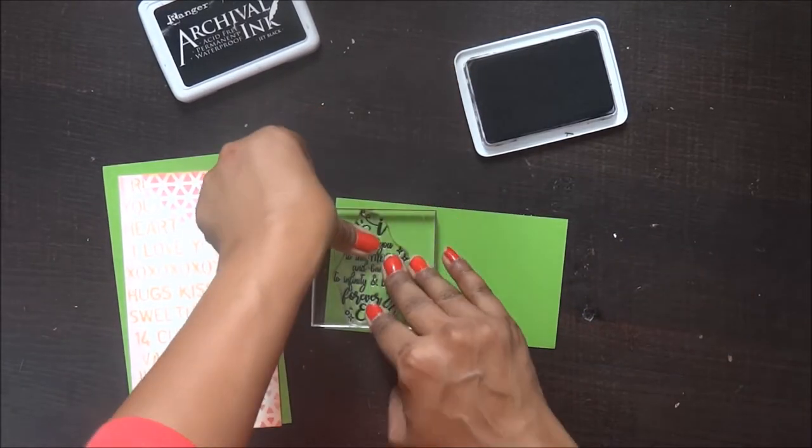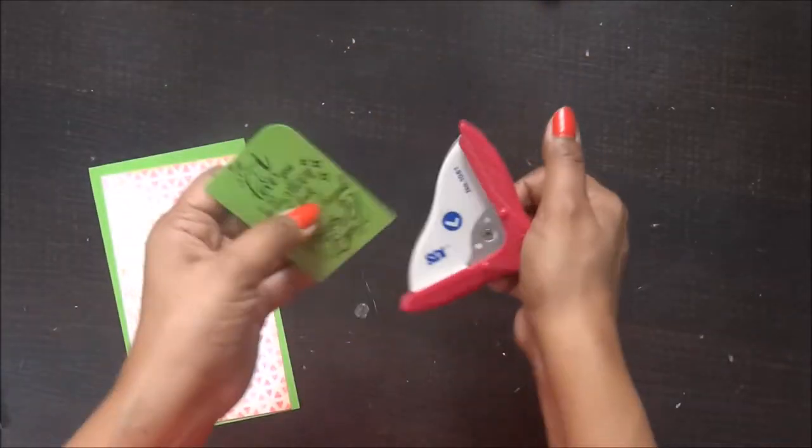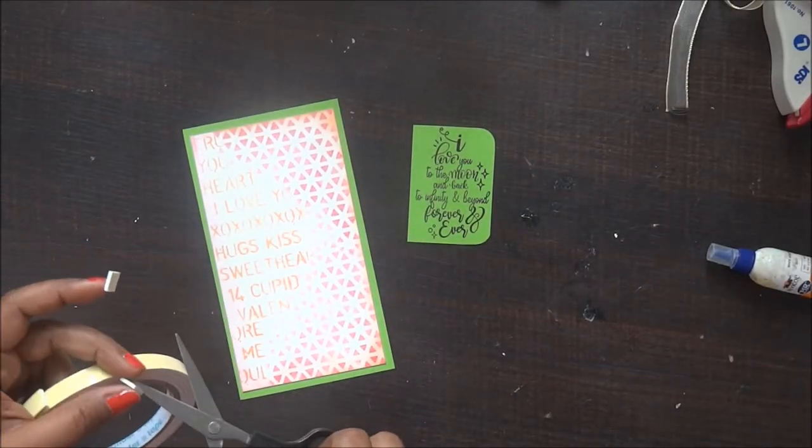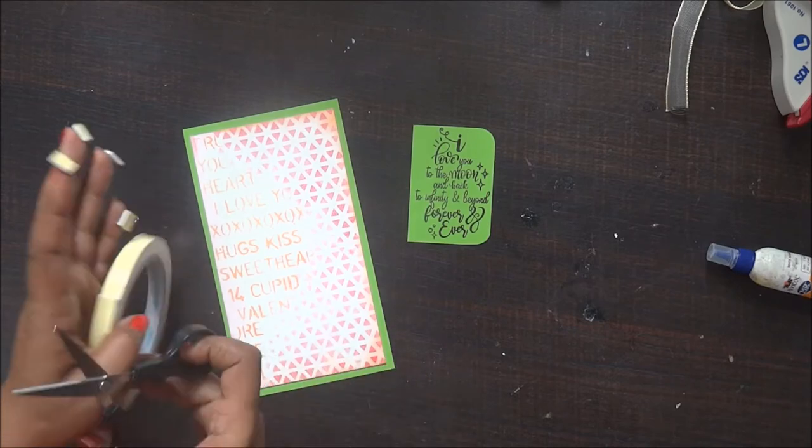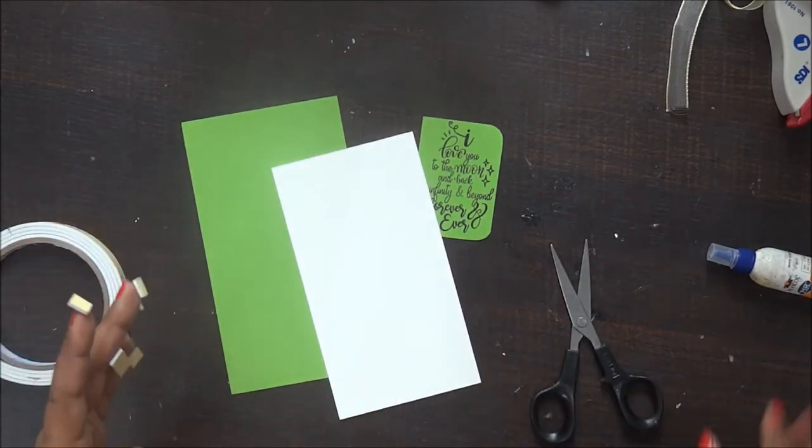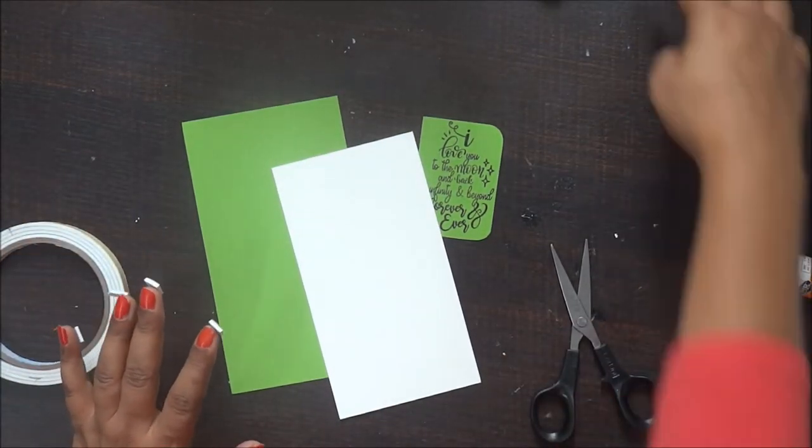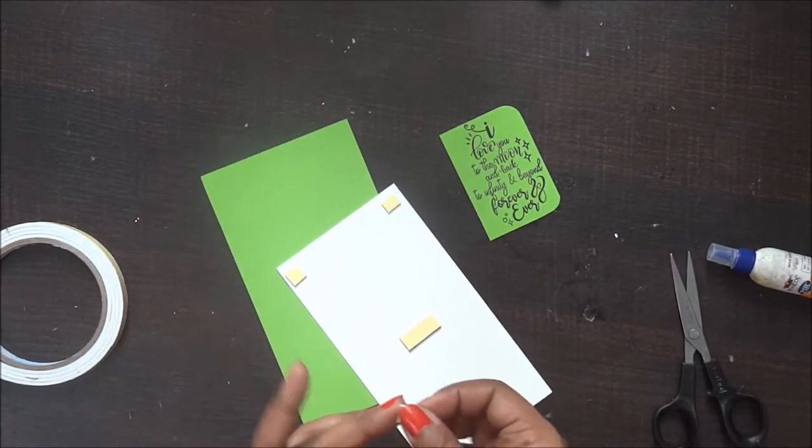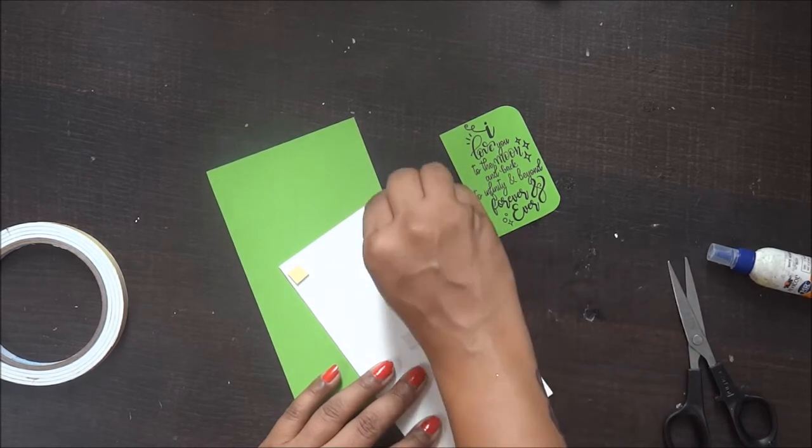Once I'm done with finishing my sentiment stamping and corner punching, I'm going to use my foam tape on the back of my card layout. I really like using foam tape as it gives different depth to your projects.